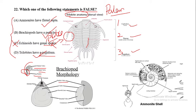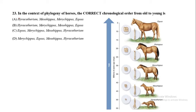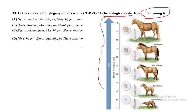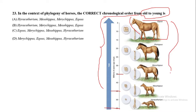Moving on to Question 23: in the context of the phylogeny of horses, we need to find the correct chronological order from old to young. To answer this, we look at the image showing horse evolution from millions of years ago to the present.